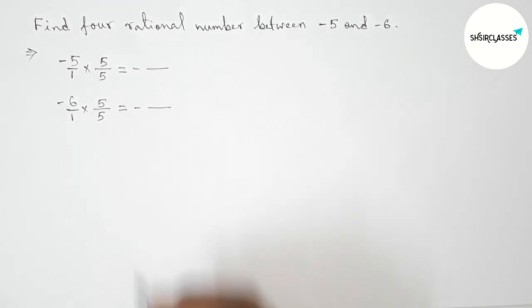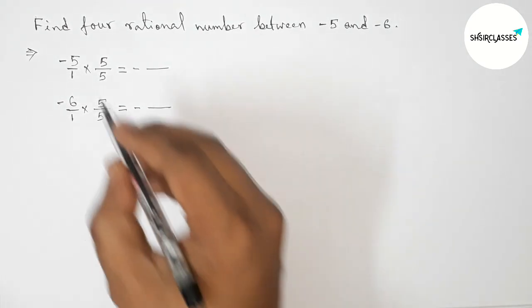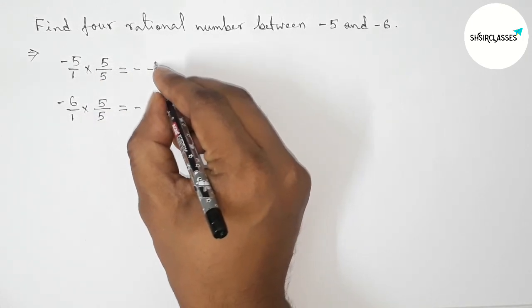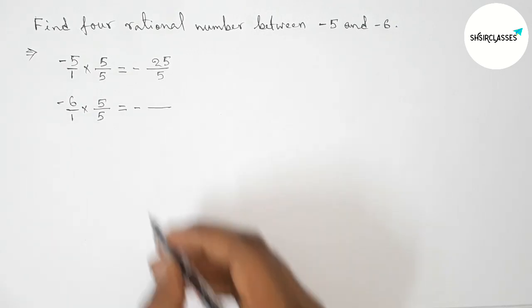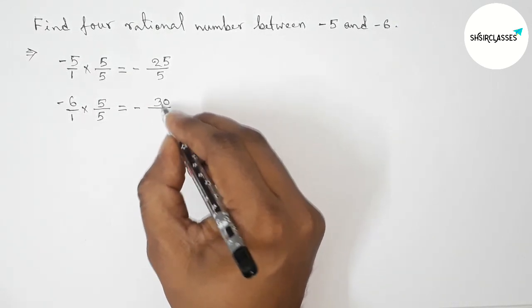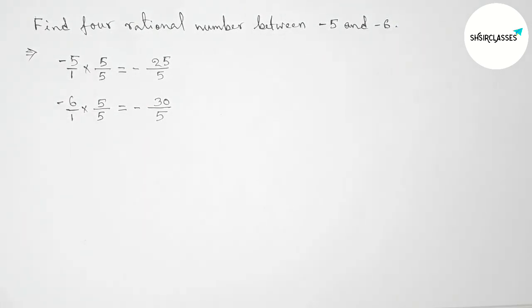So here first minus, this is minus 25 by 5, and here 5 times 6 is 30, so this is minus 30 by 5. Okay.